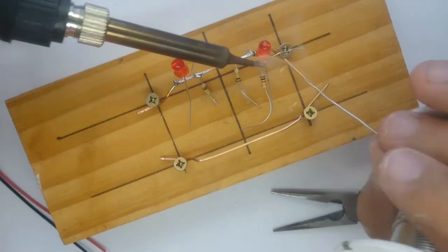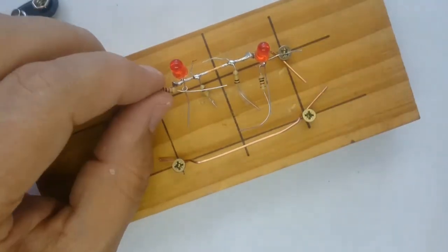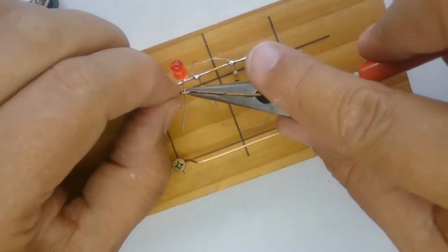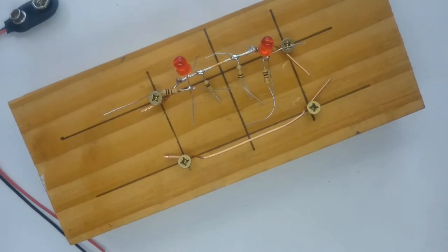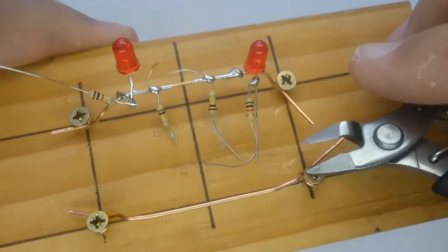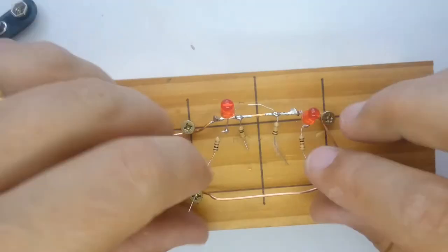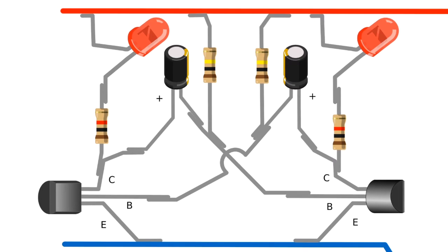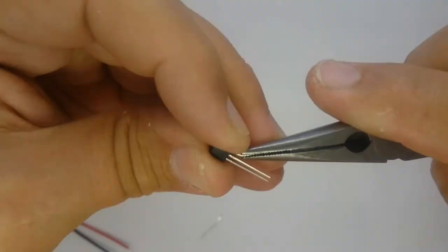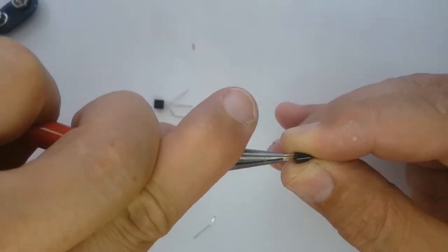You can use different values to the values we are showing here. Between 47 kilo-ohms and 220 kilo-ohms would give the best results. The electrolytic capacitors can also be changed to vary the flashing rate of the circuit. Here you will see we've already placed the 100 kilo-ohm resistors, and we're now placing the one kilo-ohm current-limiting resistors that prevent the LEDs from drawing too much current and getting burnt out.